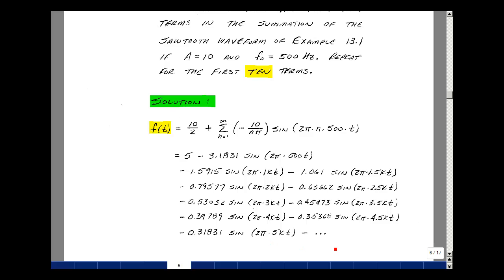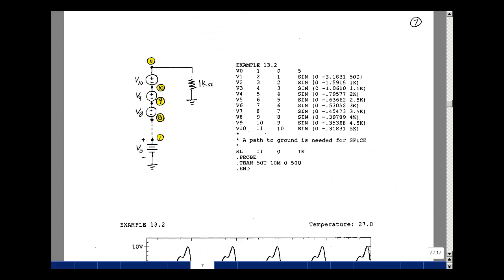This does continue on, but I want to show you that with 5 terms or 10 terms, that we're pretty close to the final waveform. One way to plot f of t is to turn into a voltage. So we have the summation of 10 voltages plus a constant, so that would be 11 voltages. So I put together a series combination of voltage sources with nodes 1 through 11.